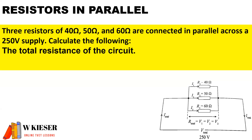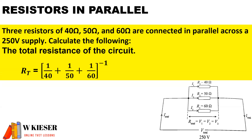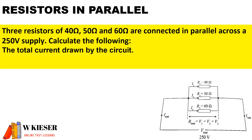For this example of resistors in parallel: three resistors of 40 ohms, 50 ohms, and 60 ohms are connected in parallel across a 250 volt supply. Inside our brackets we have 1 over 40 plus 1 over 50 plus 1 over 60, all to the power of minus one, and that gives us the total resistance for the parallel branch.